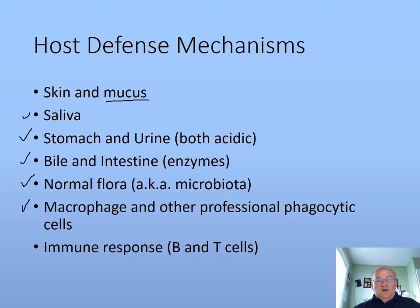Also, we have macrophages and other professional phagocytic cells inside our bodies that are looking for foreign objects, ready to phagocytize and digest them. As a foreign object such as a microbe enters our body, our immune system is constantly looking to destroy them and mount an immune response. So we have a whole team of defense mechanisms helping prevent us from disease.